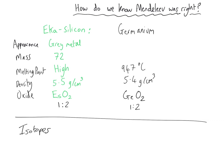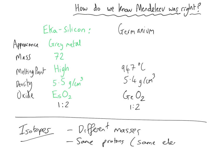In the early 20th century, the discovery of isotopes confirmed that Mendeleev was correct not to place elements in a strict order of atomic mass, but to account for their chemical and physical properties. Isotopes of the same element have different atomic masses but identical chemical properties, so they occupy the same position in the periodic table. Because isotopes have the same number of protons — and therefore the same atomic number and same number of electrons — they have the same chemical properties, since it's the electrons that influence chemical behaviour.